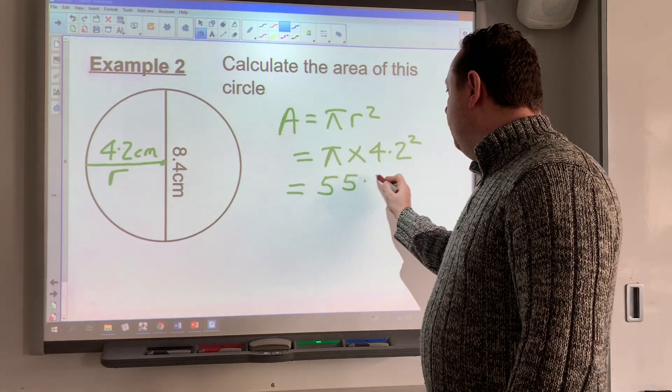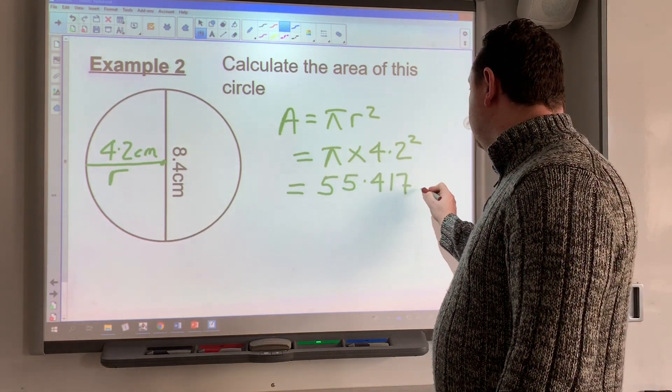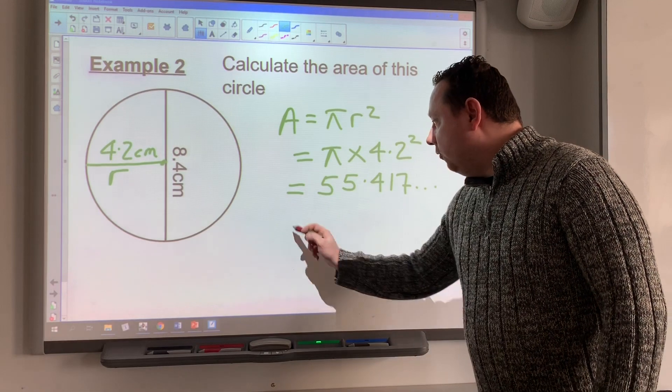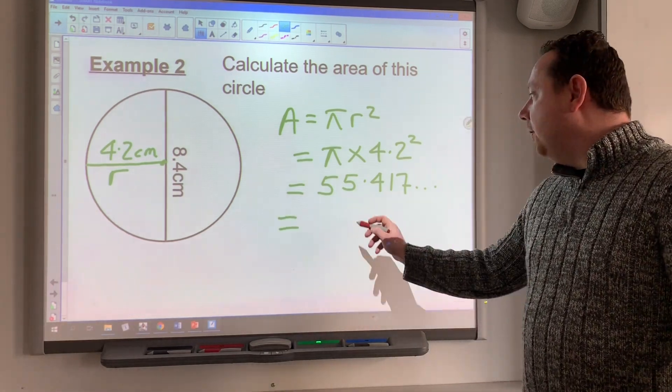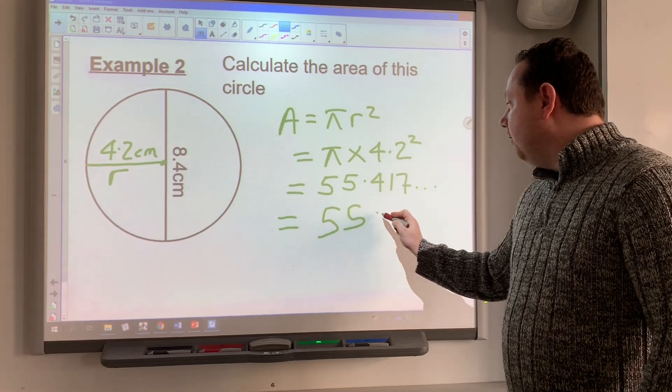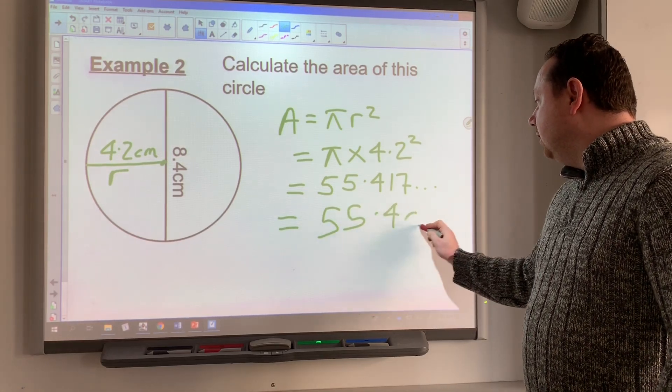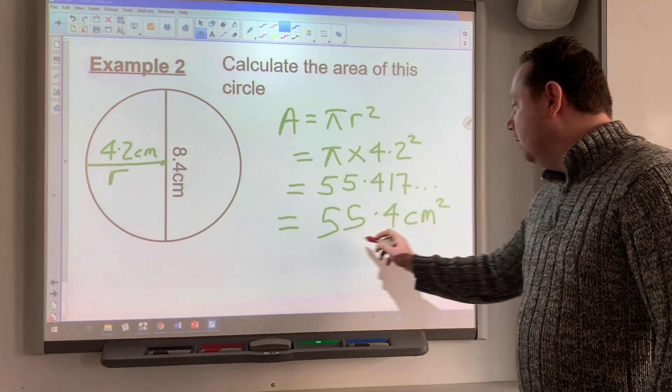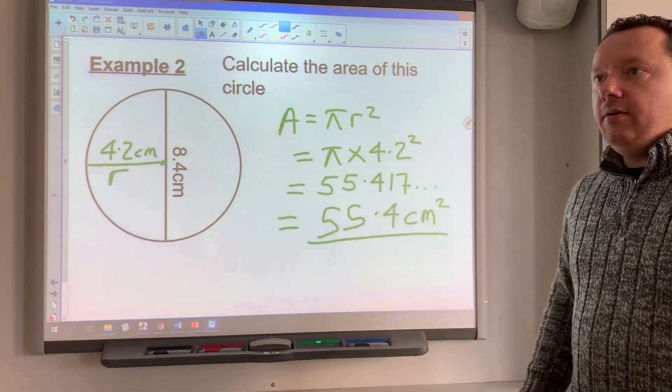Rounding that to one decimal place: 55.4 cm². Always use squared units for area.